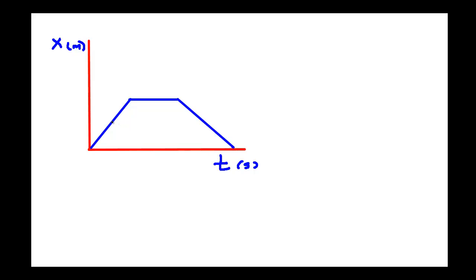The horizontal axis is time in seconds and the vertical axis is position in meters. If you want to find the velocity of the object at a particular point — say at one meter and two seconds — you can easily read the position, but to find the velocity you need to find the slope of the tangent line at that point. That slope gives you the velocity v.